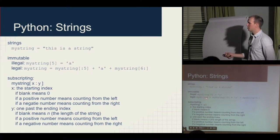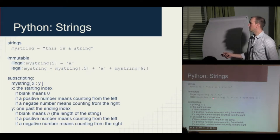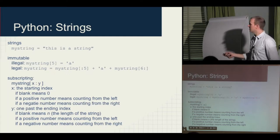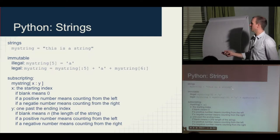You can, however, change where a variable points. You can say mystring equals a new thing — construct a new string on the right-hand side where you get the substring up to position 5, then the value 'A', then the substring after position 5 to the end. That would be a way to replace one string with another.